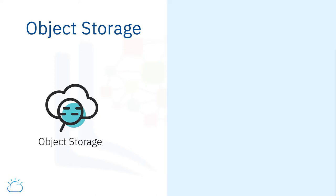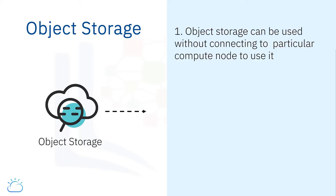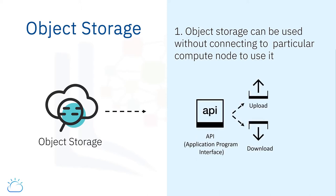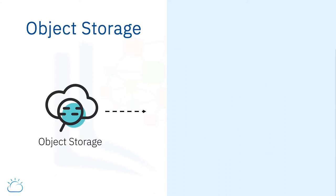The first thing to note about object storage is that you do not connect it to a particular compute node in order to use it. Instead, you provision an object storage service instance and use an API, or application program interface, to upload, download, and manage your data. This means you can directly use object storage with anything that you can call an API and you don't need an underlying compute node.